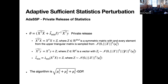To make it differentially private, we use sufficient statistic perturbation. The analytical solution has three statistics: the covariance matrix, the smallest eigenvalue, and the cross term. We add Gaussian noise to all three of these statistics. Based on the post-processing theorem, as long as those three statistics are differentially private, anything we compute from them is also differentially private — so theta itself will be differentially private.